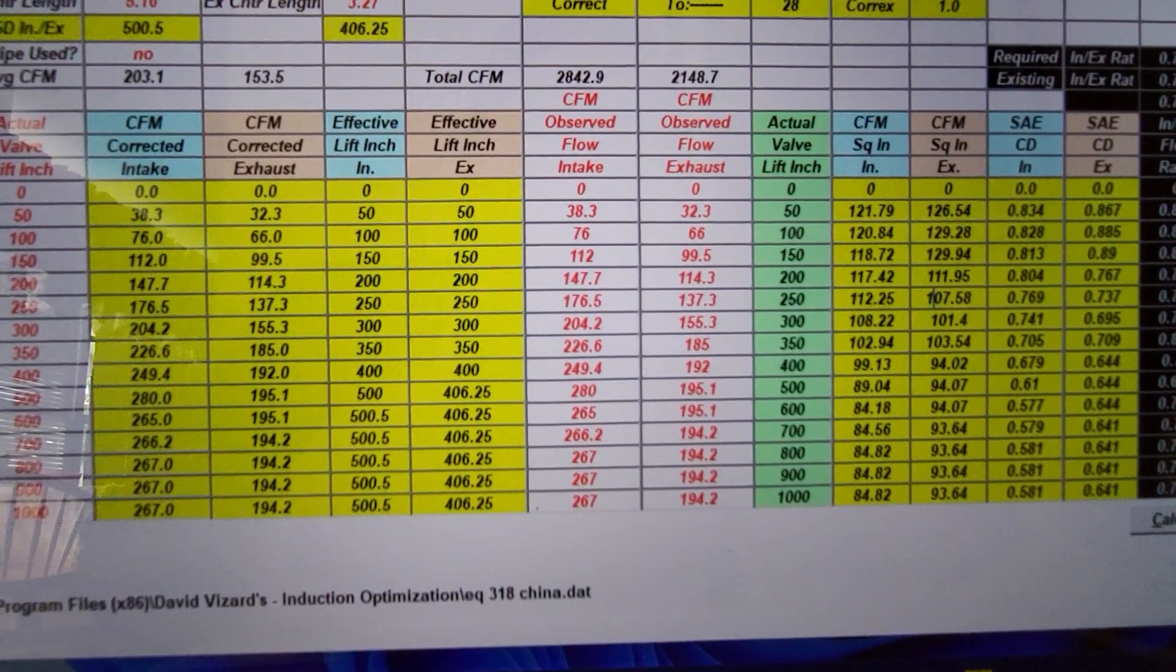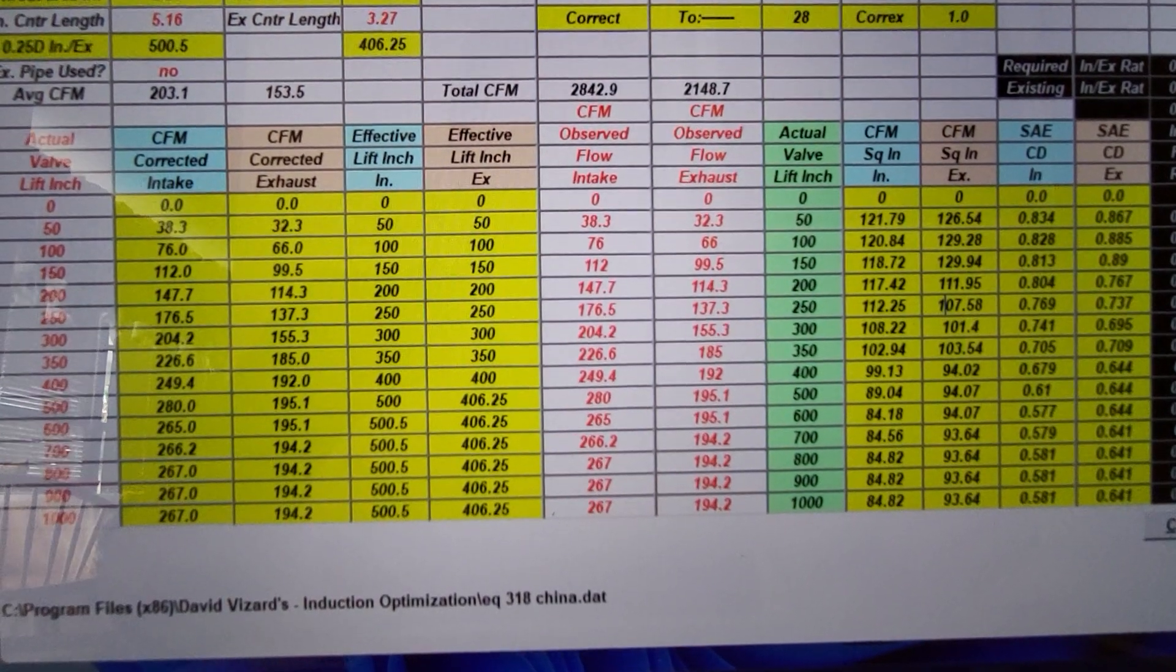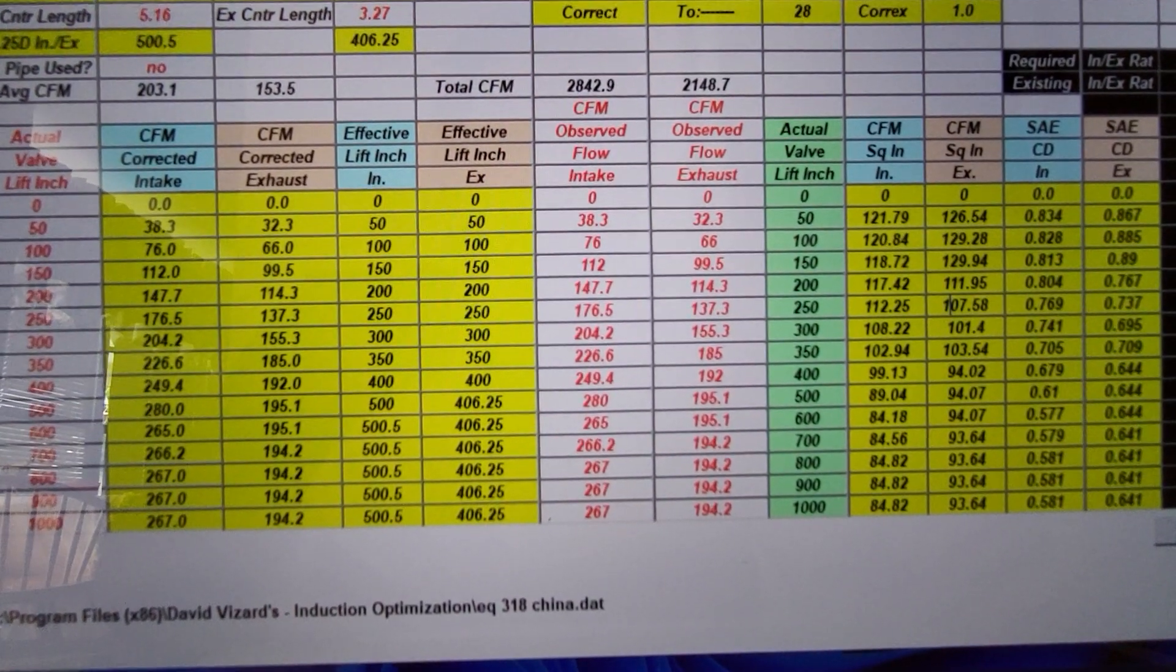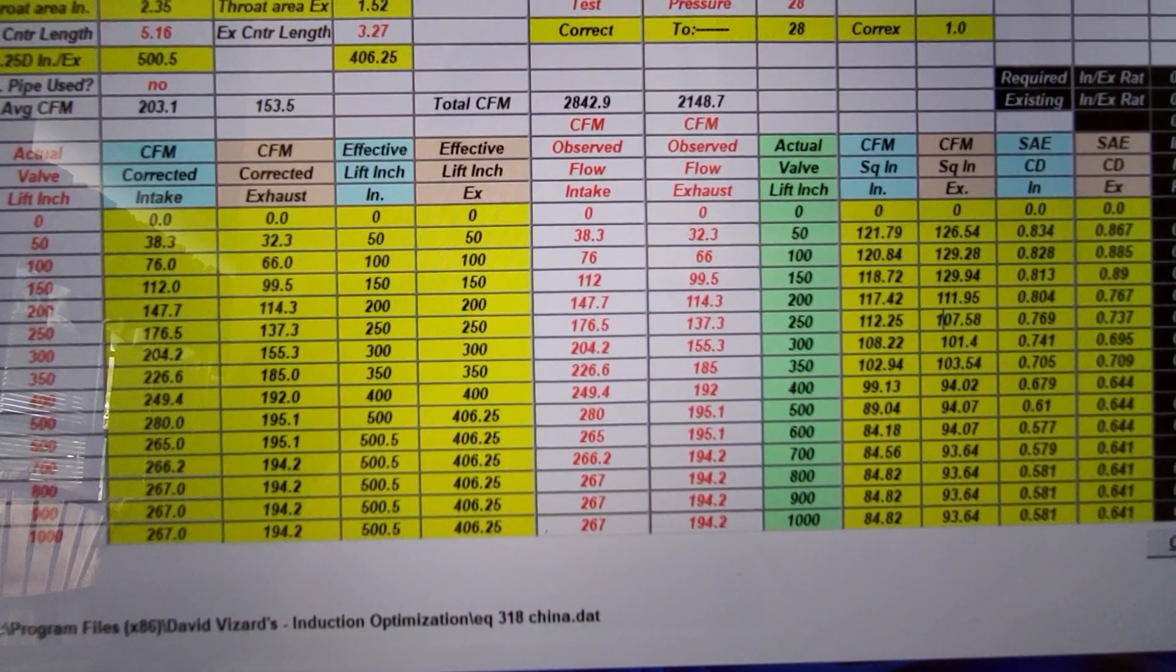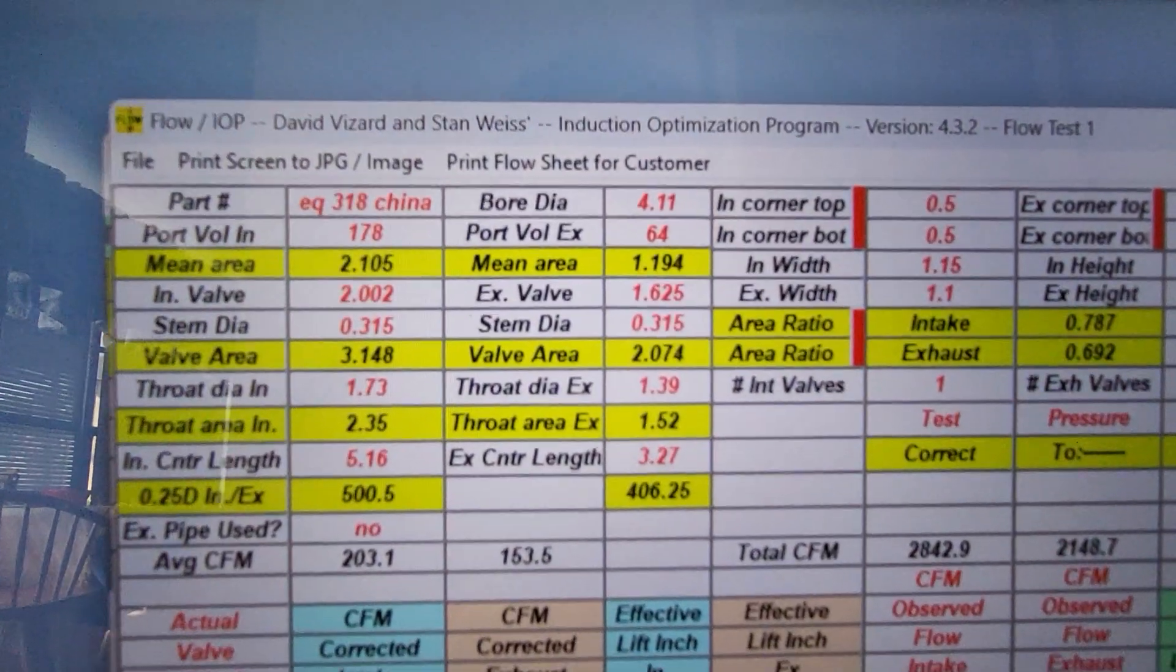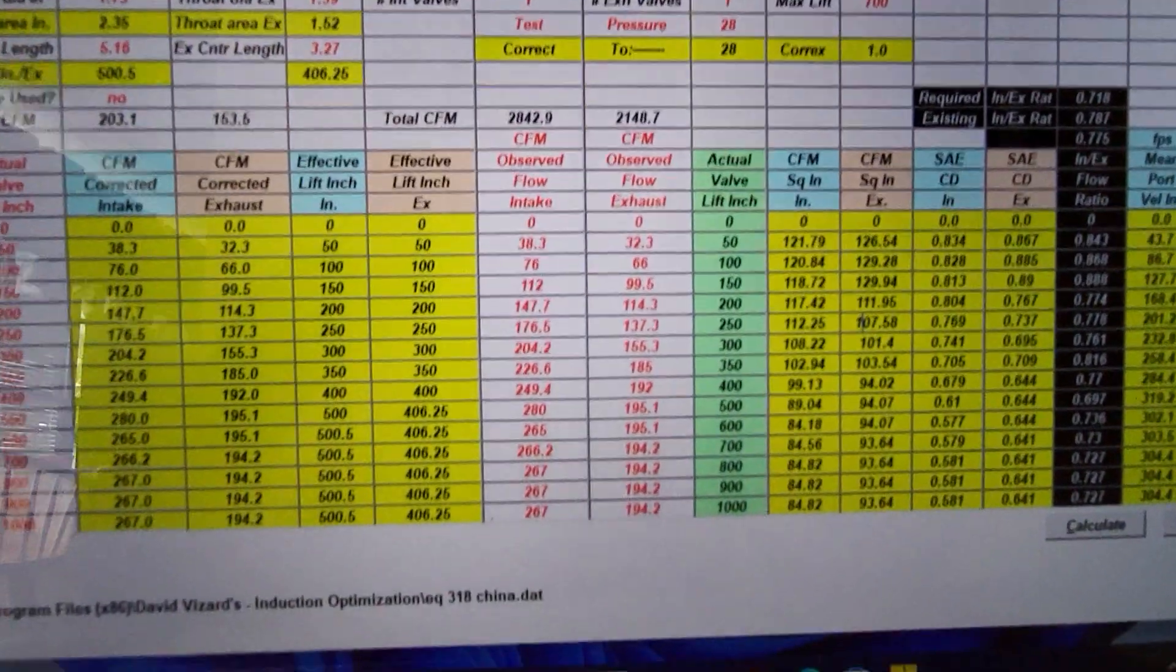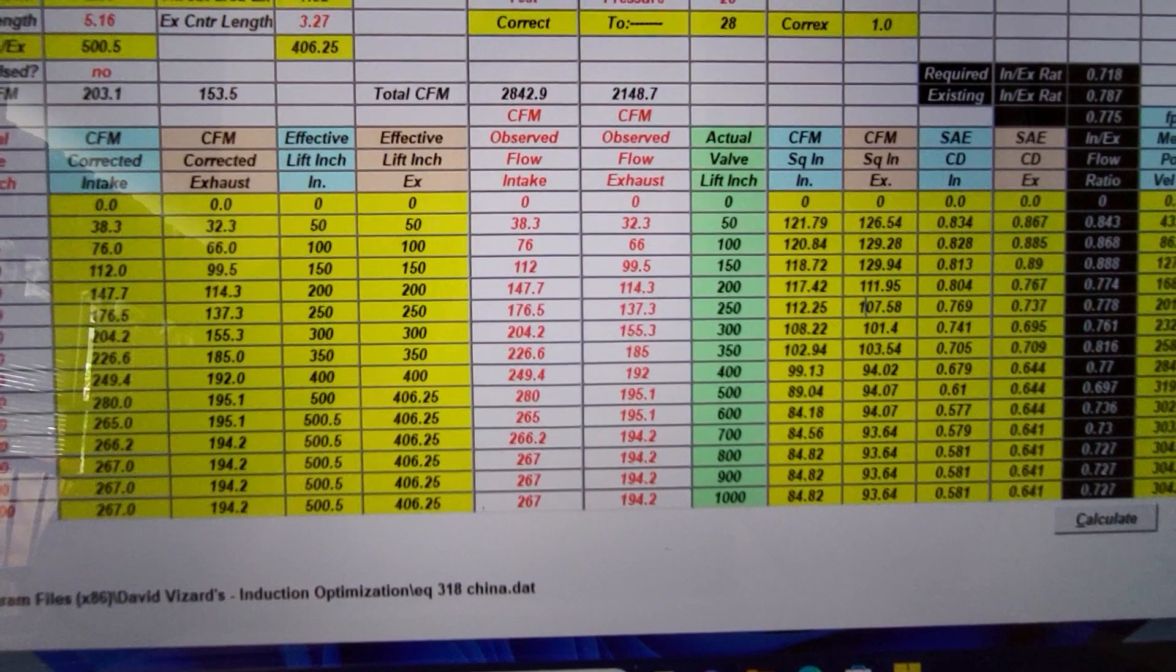I was thinking of doing this as a direct comparison to the Performance Trend flows that I did, but the way this is set up with the port lengths, I would have to add in the port lengths and volumes of the intake manifold and I wasn't going to do that.